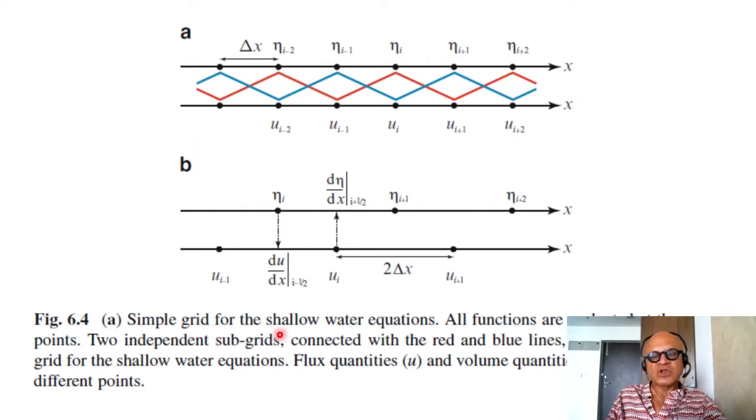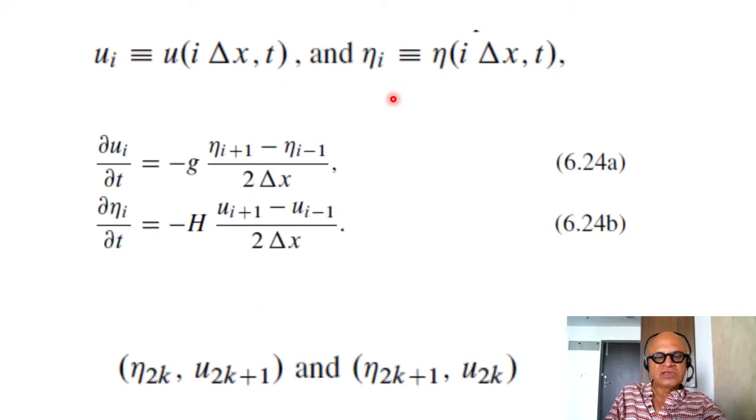So the simple grid for shallow water equations, all functions are evaluated at the same points, two independent subgrids connected with the red and blue lines results. So you have delta x and you have eta i minus 2, eta i minus 1, eta i, eta i plus 1, eta i plus 2 and you are computing the u also at the same point. But when you evaluate these discretizations, you are basically zigzagging for the quantities in this way. So you have basically no information exchange between these grid points that we talked about eta 2k and u 2k plus 1 and eta 2k plus 1 and u 2k.